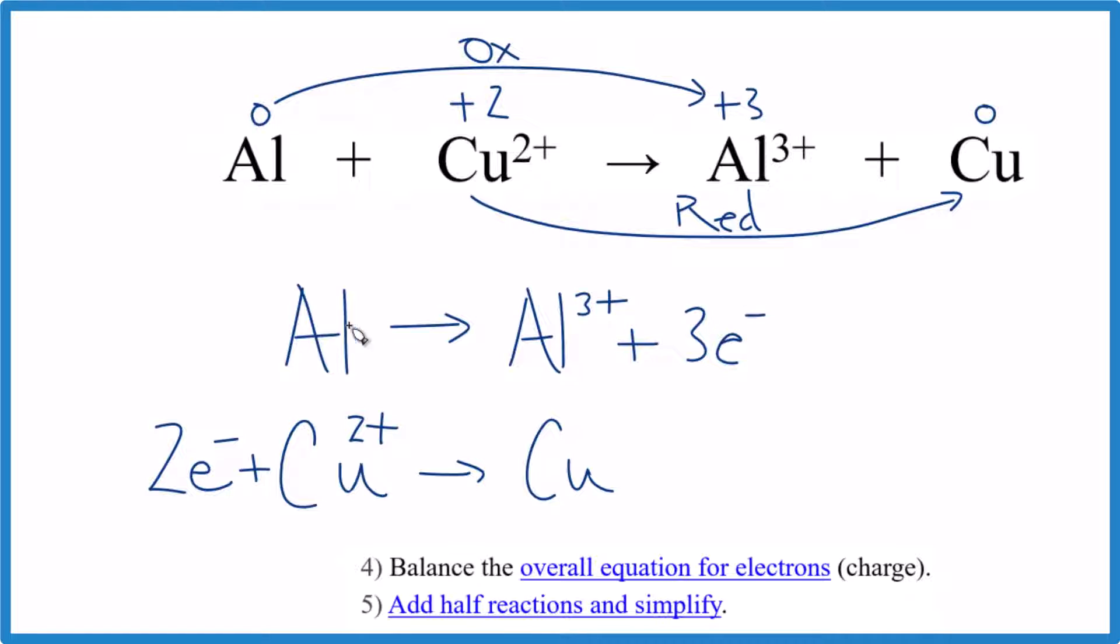Here's the thing, though. The aluminum lost three electrons. Copper got them. So aluminum can't lose three and copper only get two. We need to balance the electrons.